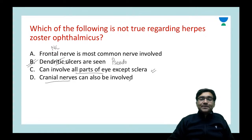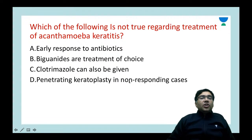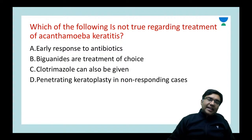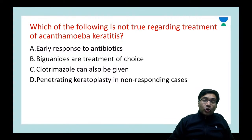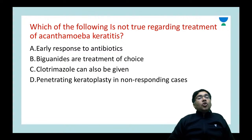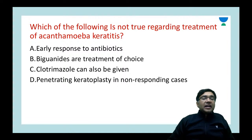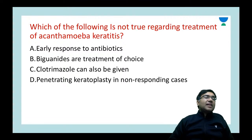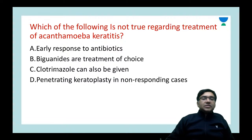Moving to Acanthamoeba keratitis — a parasitic keratitis more common in contact lens users. Which is not true regarding treatment of Acanthamoeba keratitis? Options: early response to antibiotics, biguanides are treatment of choice, clotrimazole can be given, penetrating keratoplasty in non-responding cases. The answer is A — early response to antibiotics. Acanthamoeba keratitis specifically involves the nerves (radial keratoneuritis), causing a lot of pain disproportionate to signs. These patients do not respond well to treatment.